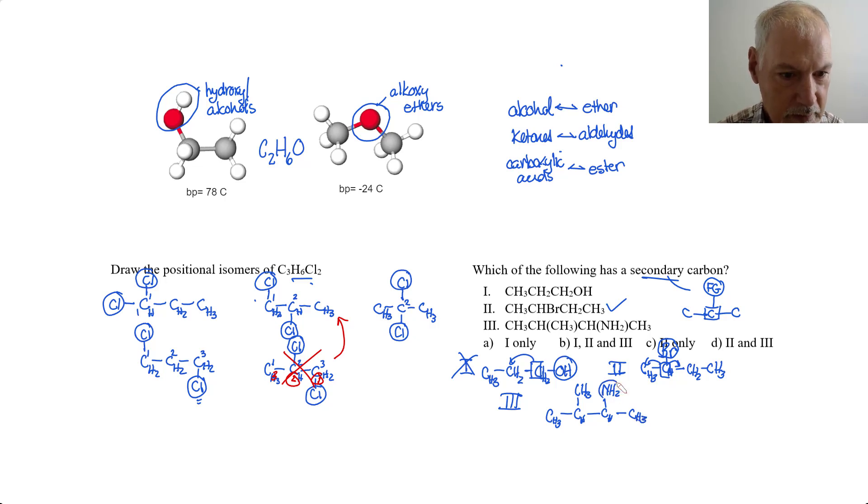So, there is my functional group, the amino functional group attached to that carbon. And it is attached to two others. So, it is also a secondary example. So, that's my answer. I want two and three.